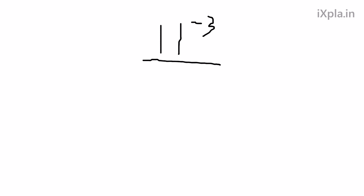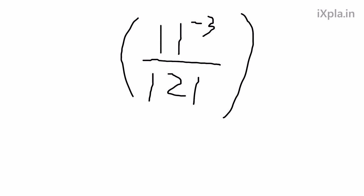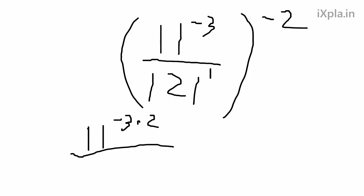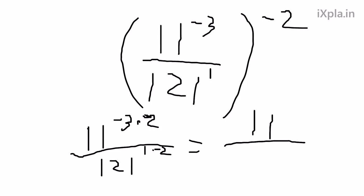So we have 11 to the negative 3 over 121. Remember, every number is actually to the power of 1, and we're applying negative 2. So we get 11 to the negative 3 times negative 2, over 121 to the 1 times negative 2. That gives us 11 to the positive 6 — because negative times negative makes a positive — and 121 to the power of negative 2.